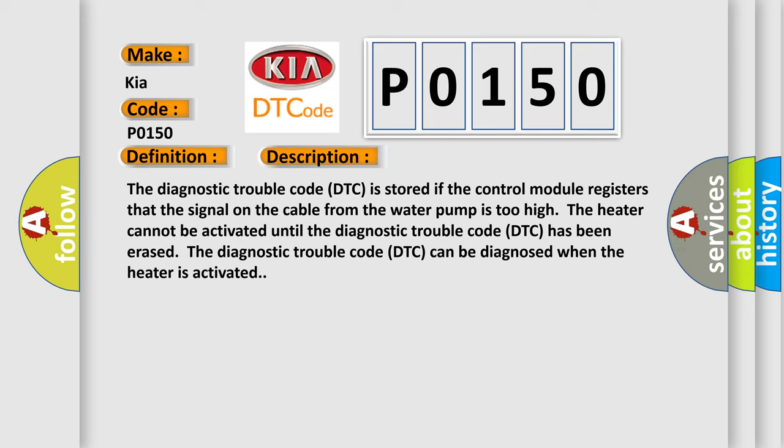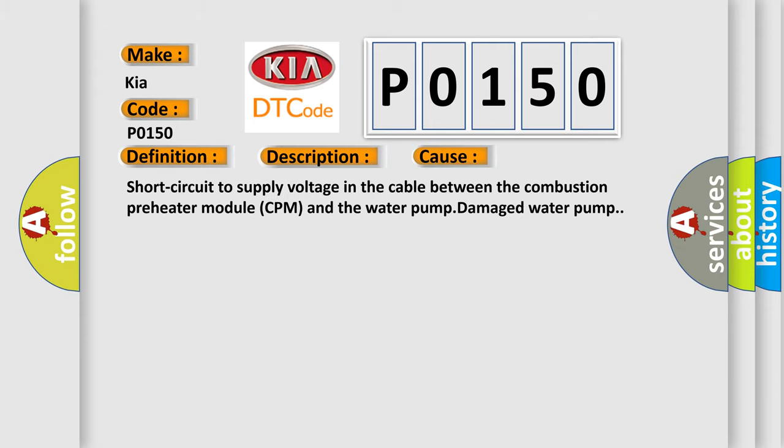The Diagnostic Trouble Code DTC can be diagnosed when the heater is activated. This diagnostic error occurs most often in these cases: short circuit to supply voltage in the cable between the combustion preheater module CPM and the water pump, damaged water pump.